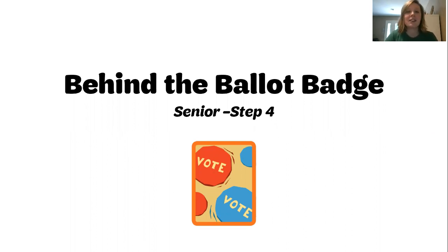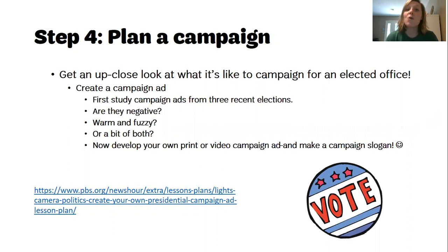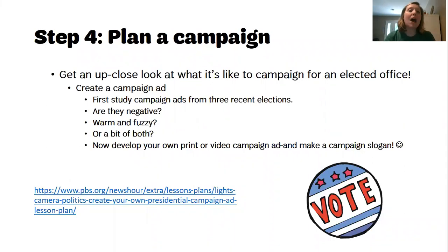Step four involves you planning a campaign so you're going to get an up-close look at what it's like to campaign for an elected office. In order to complete step four you're going to create a campaign ad of your own. Your job first though is to study campaign ads from possibly three recent elections, and that doesn't have to be from this year 2020 — that can be from previous years, maybe 2016, 2017, or 2018. Somewhere within the past several years you'll want to do some research and make some observations.